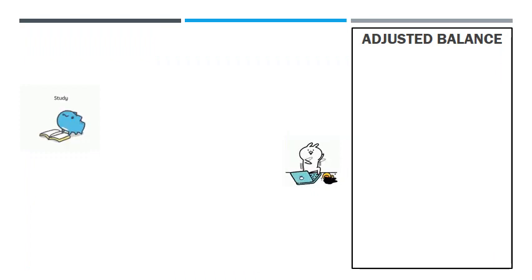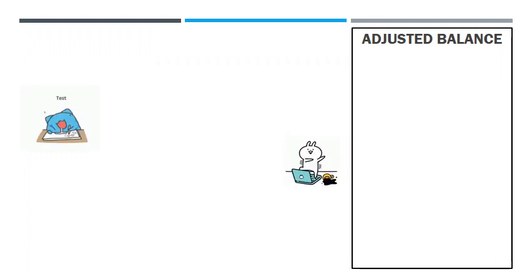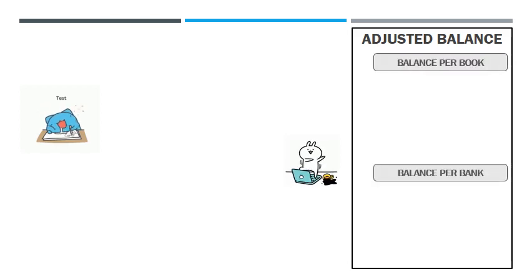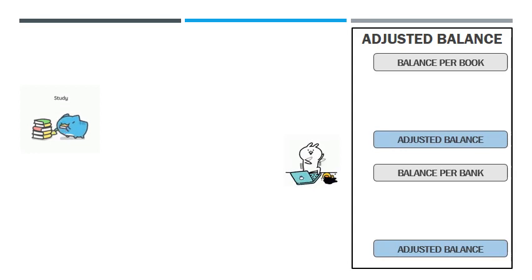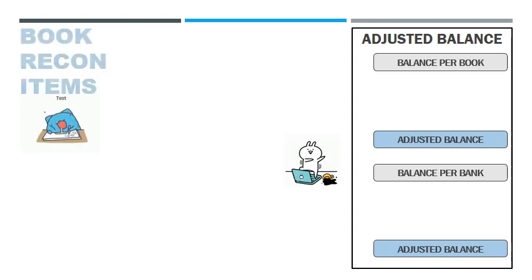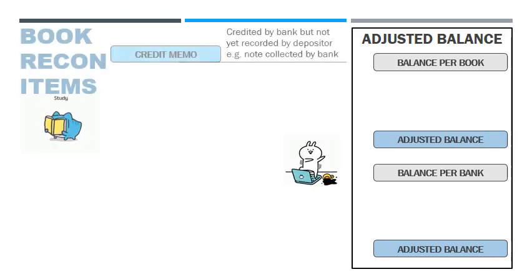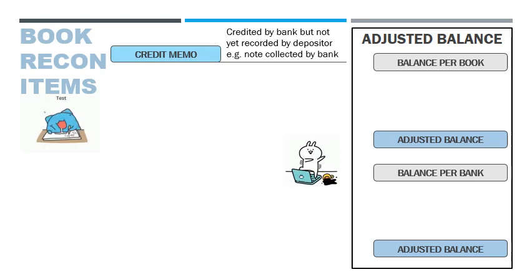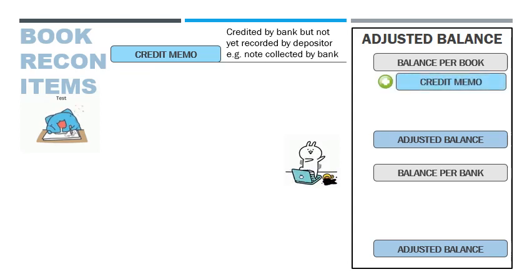The first method of bank reconciliation is the adjusted balance method. This method starts with the unadjusted cash balances and ends with the adjusted cash balance. The book reconciling items are the following. First are credit memos, which are items credited by the bank but not yet debited by the company as cash receipts. These are added to the cash balance per books.